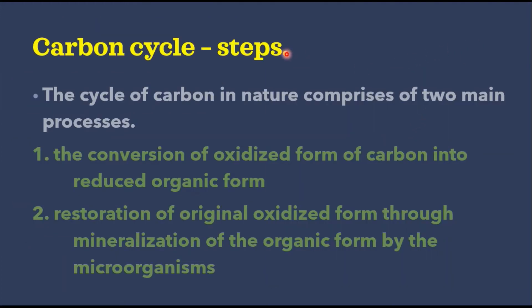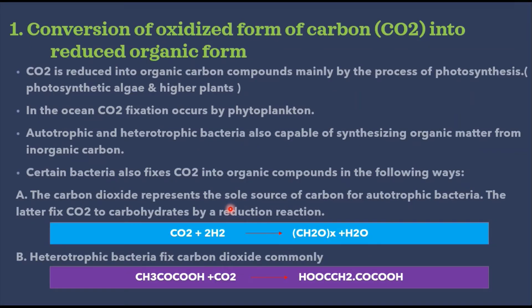What are the steps involved in the carbon cycle? The cycle of carbon in nature comprises two main processes. The first is conversion of the oxidized form of carbon into the reduced organic form — that is, CO2 into carbohydrates or other forms. The second is restoration of the original oxidized form through mineralization of the organic form by microorganisms — getting carbon dioxide back into the atmosphere.